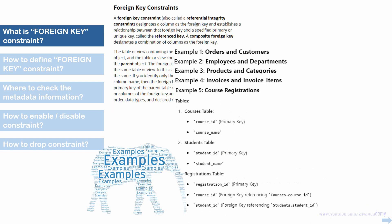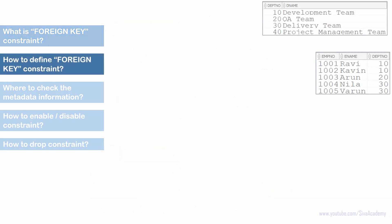One more example is course registration. We have a course table with course information and a student table with student information. When a student registers for a course, the registration table has three columns: registration ID, course ID, and student ID. Before inserting into the registration table, we need to ensure both the course ID and student ID are valid. That is why we create two foreign key constraints — one referring to the course ID of the course table, and another referring to the student ID of the student table. This demonstrates that a single table can have more than one foreign key constraint.